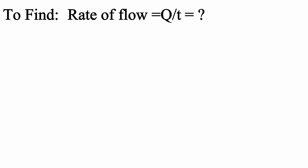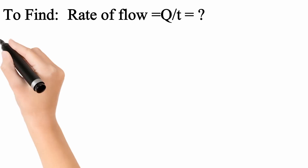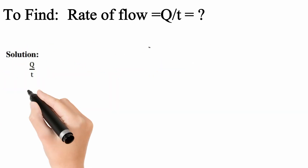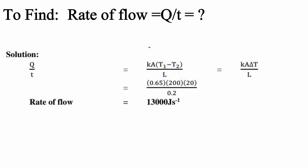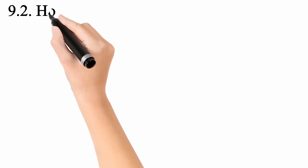हमने Q over T मालूम करना है — rate of flow। इसका formula है: Q/T = K × A × (T1 − T2) / L। Values put करते हैं: K = 0.65, A = 200, ΔT = 20, L = 0.2 meter। तो Q/T = 13,000 Joule per second। यह हमारे पास rate of flow आ गया।